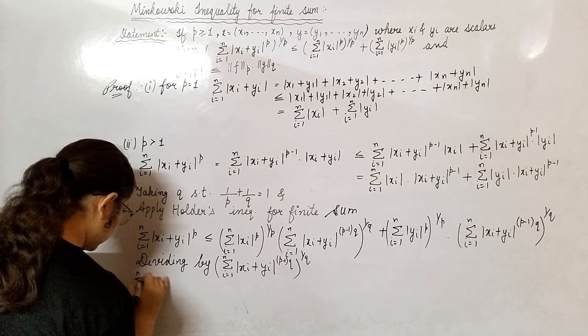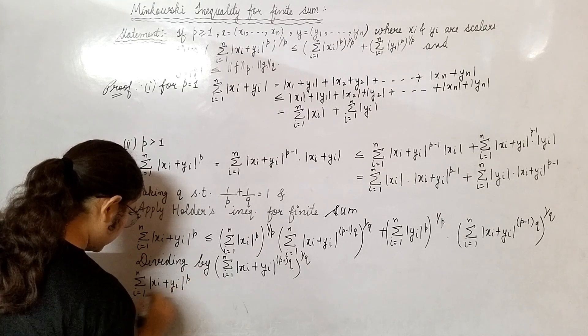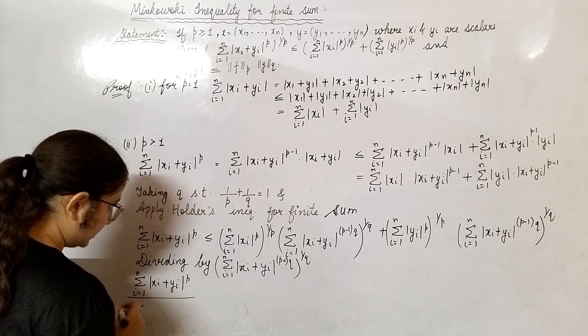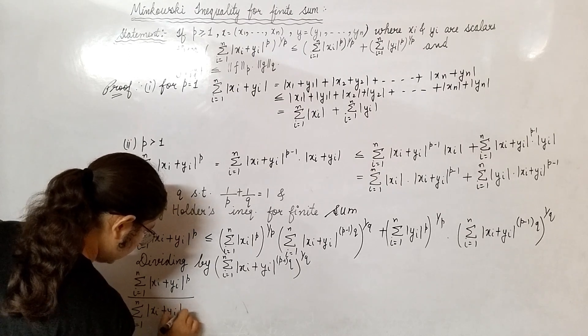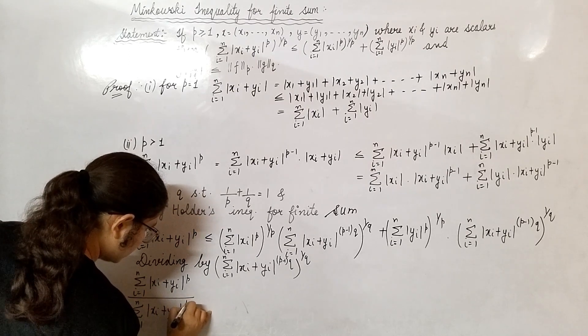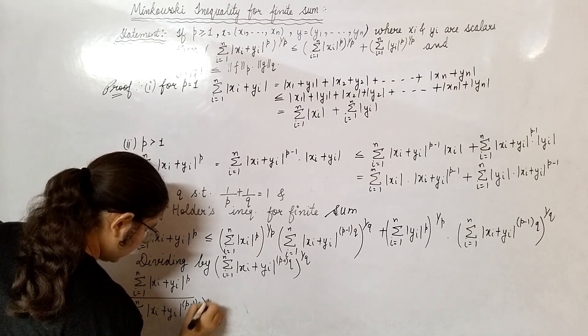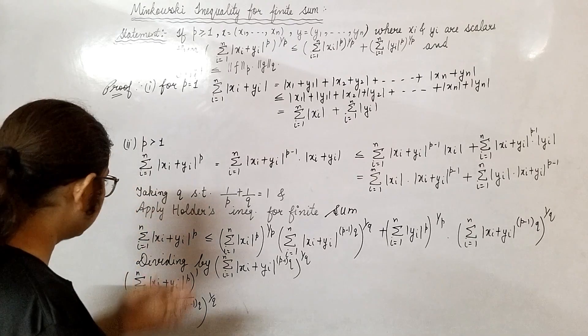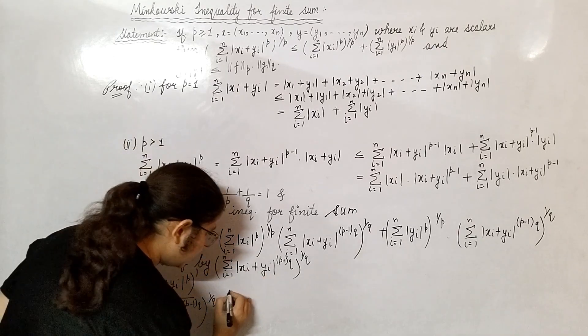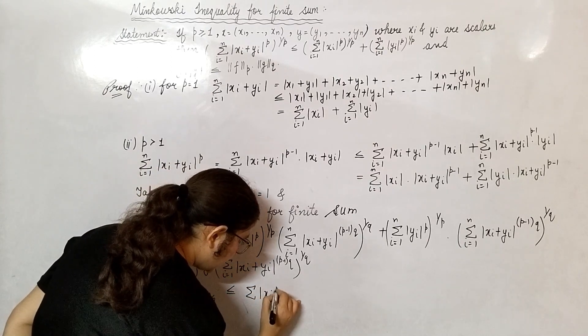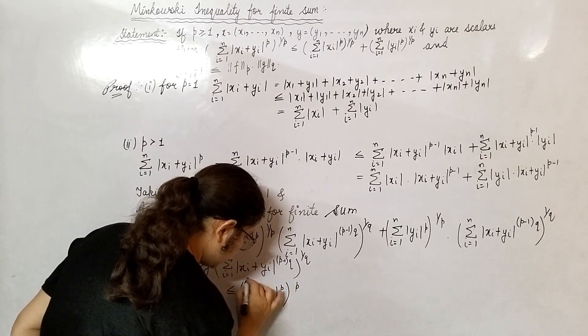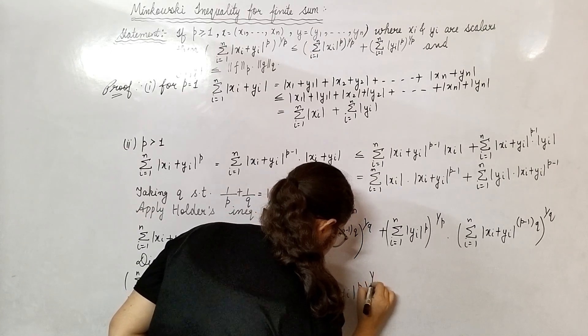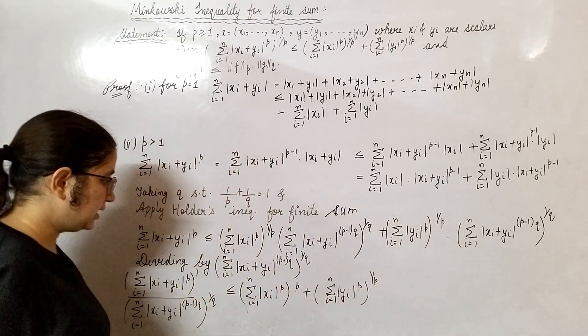Summation i from 1 to n, |x_i|^p divided by summation i from 1 to n, |x_i + y_i|^((p-1)·q) to the power 1/q equals 1. That means I can write this as summation |x_i|^p to the power 1/p, i from 1 to n, plus summation |y_i|^p to the power 1/p, i from 1 to n.